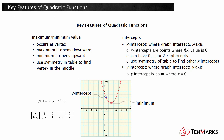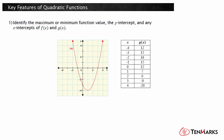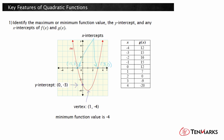Let's look at some examples of identifying key features of quadratics. Identify the maximum or minimum function value, the y-intercept, and any x-intercepts of f of x and g of x. f of x is a parabola that opens upward, so the minimum occurs at the vertex. The vertex of the parabola is at one, negative four, so the minimum function value is negative four. The y-intercept is where the parabola intersects the y-axis, which is at zero, negative three. The x-intercepts occur where the parabola intersects the x-axis. f of x intersects the x-axis at negative one, zero and three, zero.